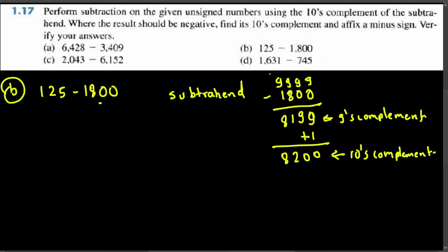Now we have to add the tens complement with the minuend: 125 plus 8200. Adding these gives us 8325. We have a 4-digit result and the number in front is 0, so this 0 in front represents a negative result.